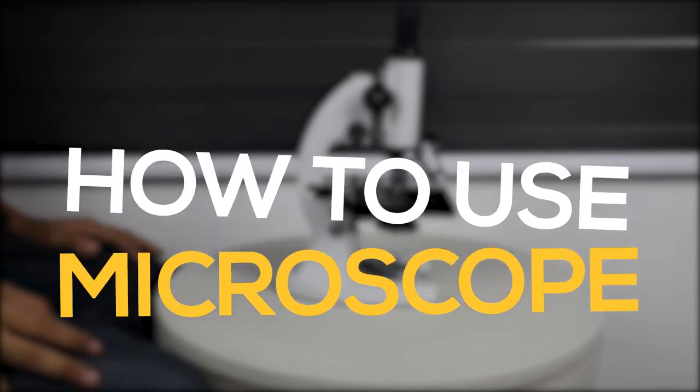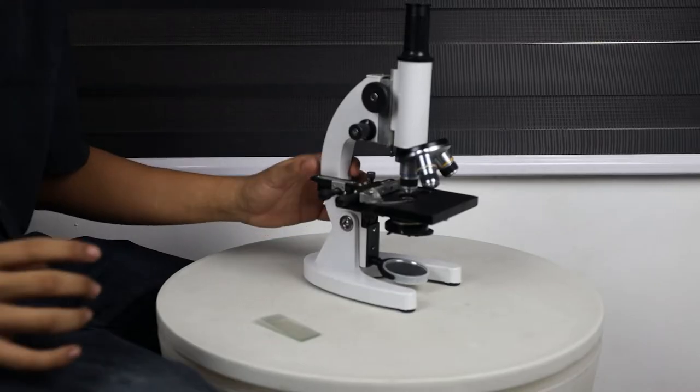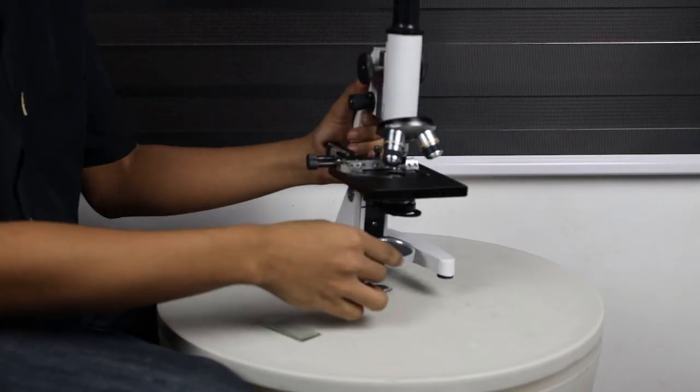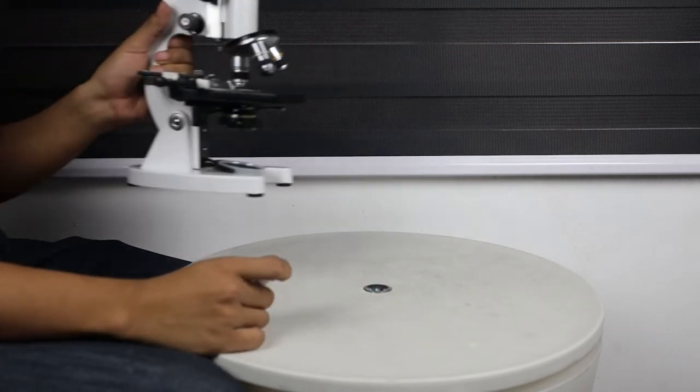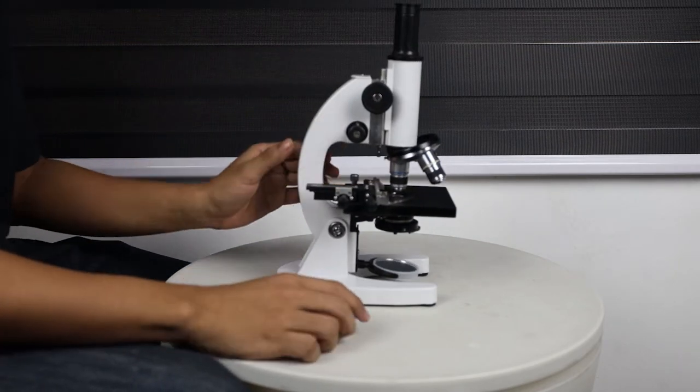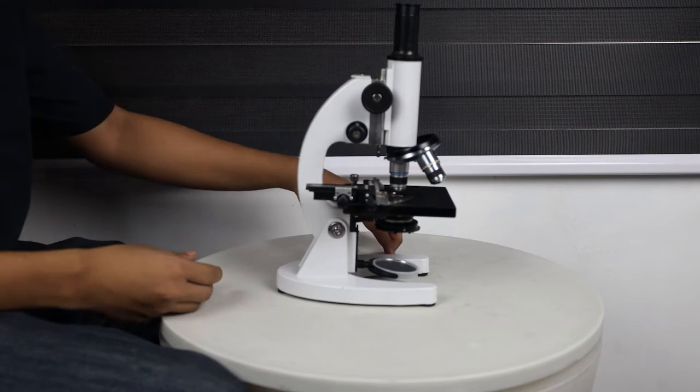These are the following steps on how to use the microscope. Step 1: Adjust the angle by one hand pressing the U-base and the other hand pulling the stand to a comfortable position for observation.